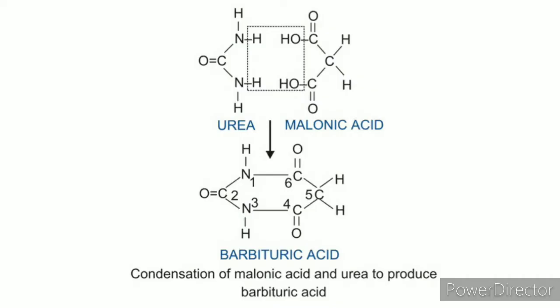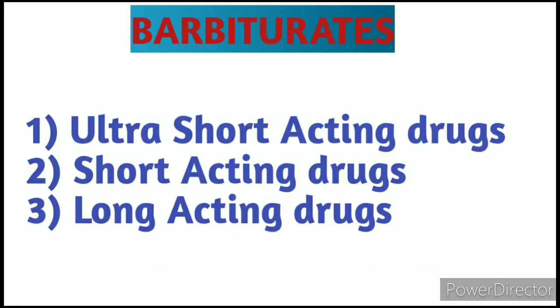Barbiturates are mainly derived from barbituric acid, which is made up of urea and malonic acid. Classification-wise, they are divided into three parts: first, ultra-short acting drugs; second, short acting drugs; and third, long acting drugs.